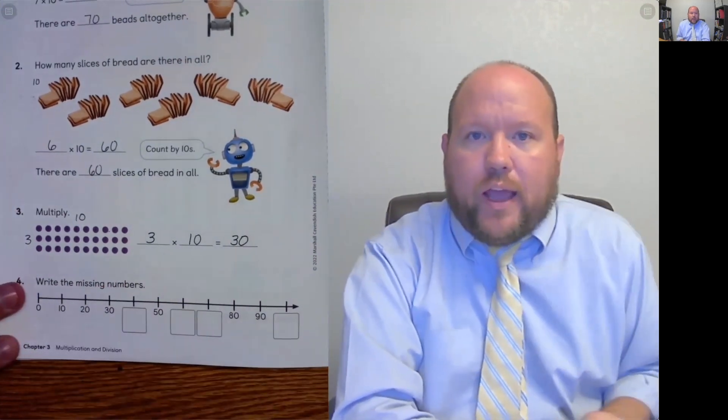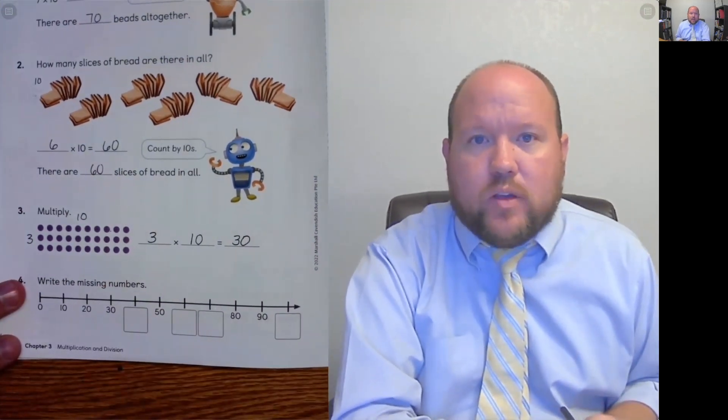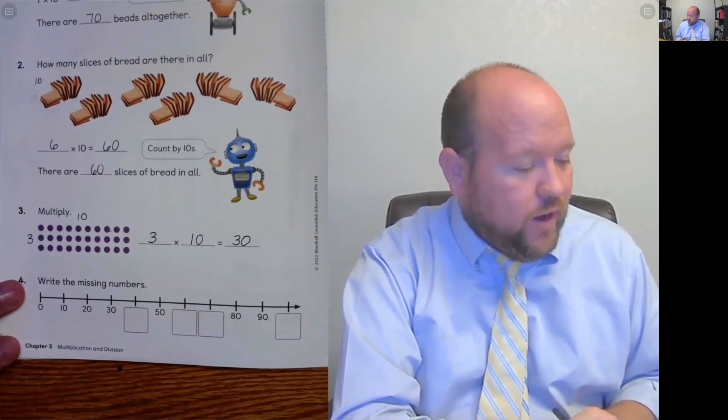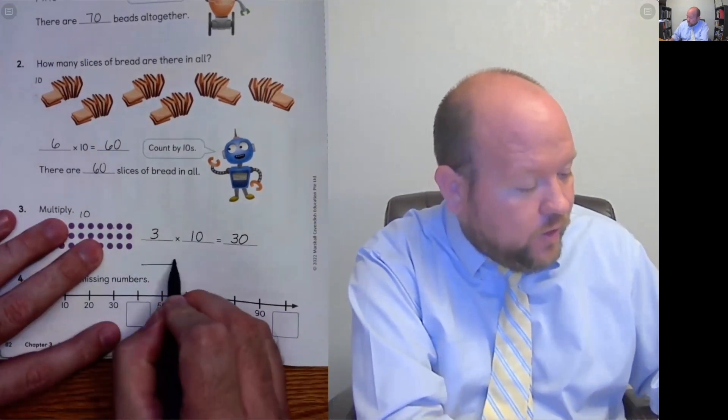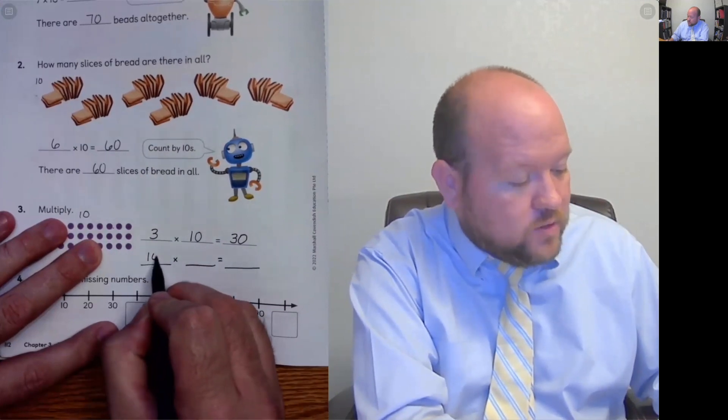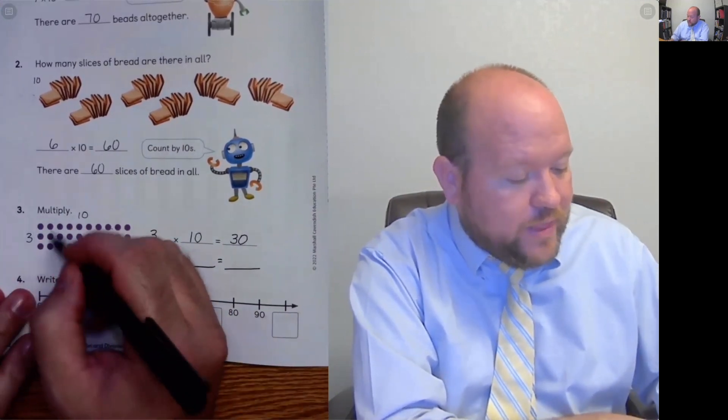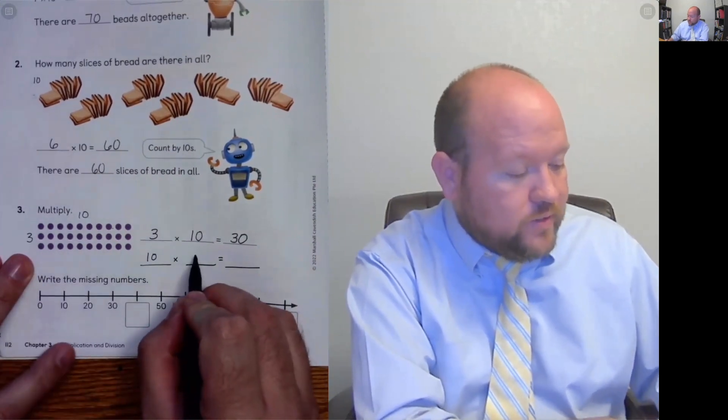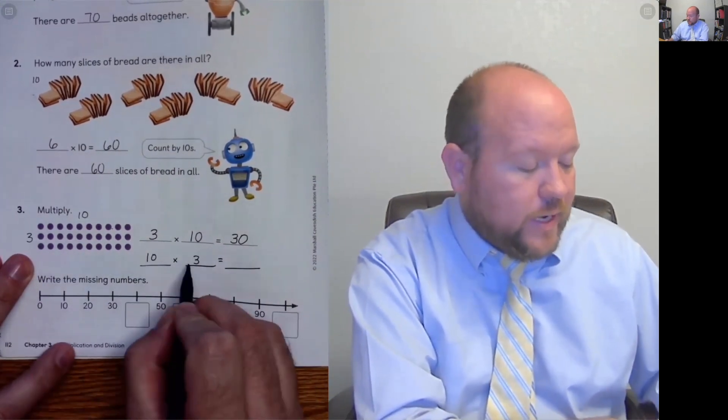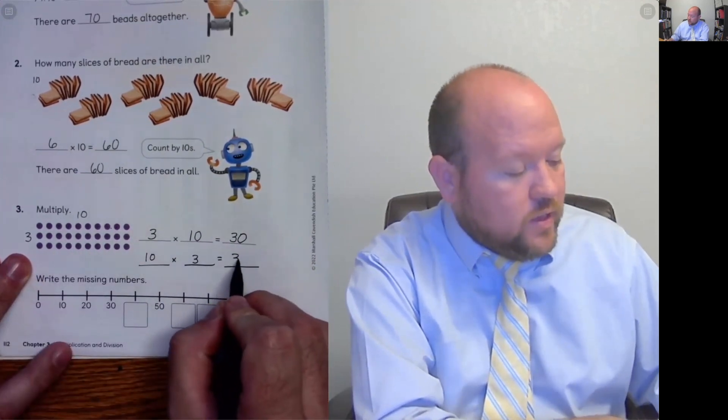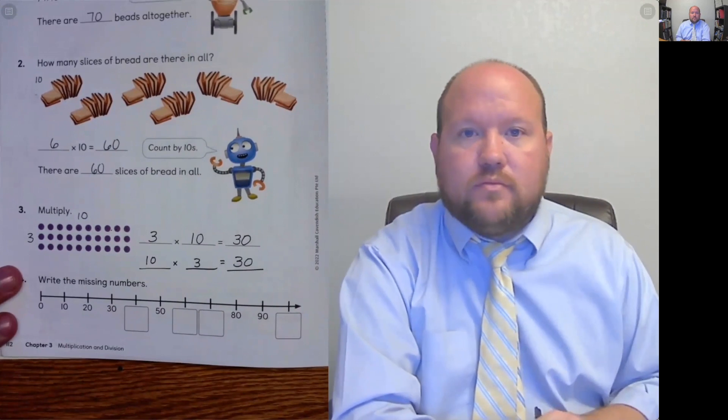Is that the only way I could write that multiplication sentence or that multiplication equation? Is there another way I could solve that? Yeah, there's another way I can do that. Because I could put 10 first. There are 10 groups this way. There are 10 groups of 3. So 10 times 3. 10 times 3, the number doesn't change. So 10 times 3 is 30.